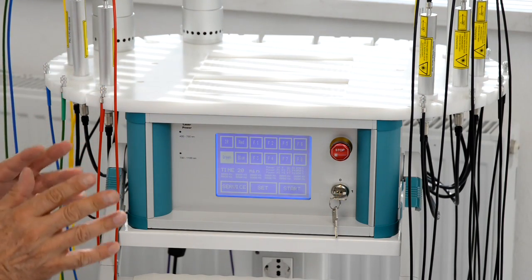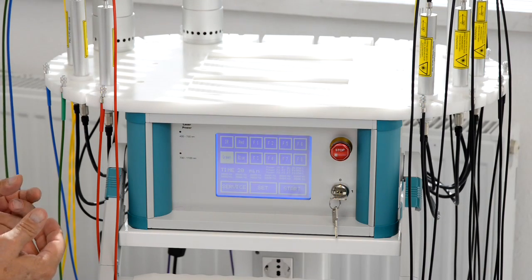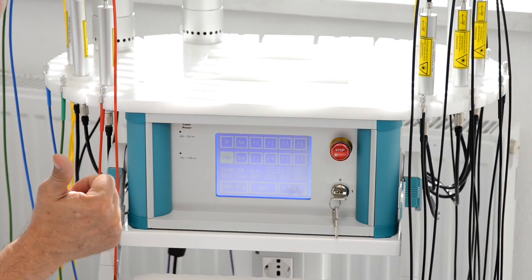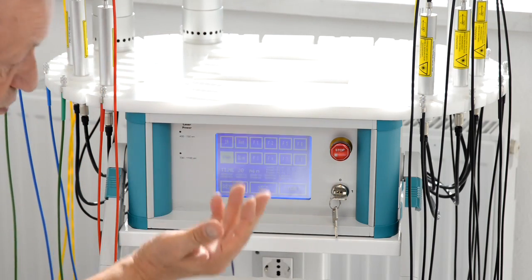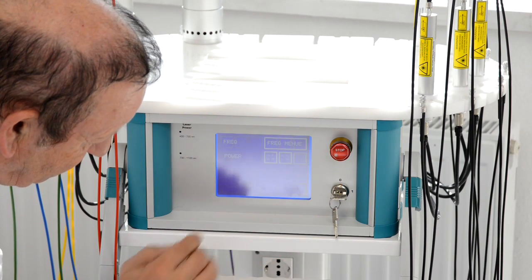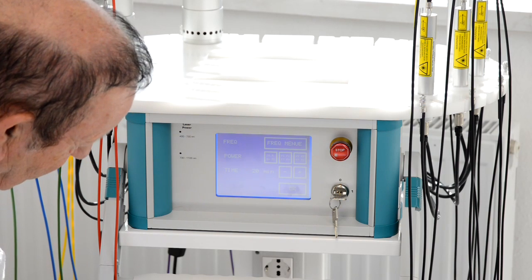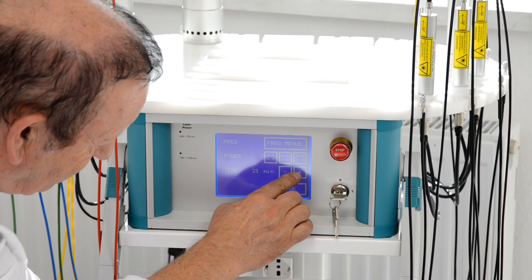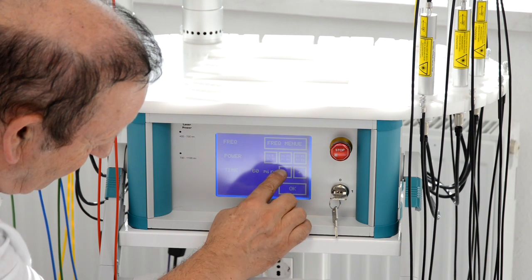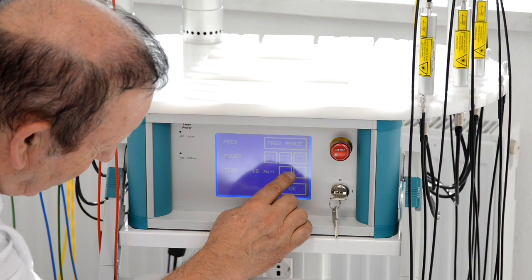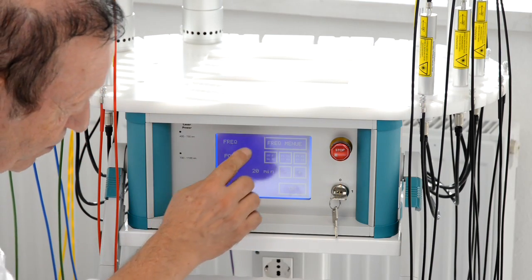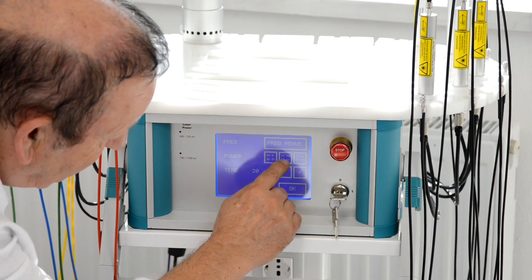If I want to change the power now for the patient, maybe I want to use the full 5mW power, I have to change to 100%. If I want to change anything on the device I press set and now I am in the set mode. In the set mode I can change the time up to 60 minutes, I go back to 20 minutes.